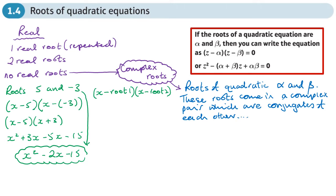These two roots are conjugates of each other. So if one root is alpha, then the other root beta is the conjugate of alpha. If we know one root we can easily find the other. We use z because we're talking about complex numbers, and we write those roots as (z minus the first root)(z minus the second root).